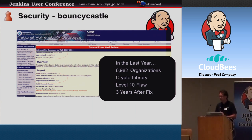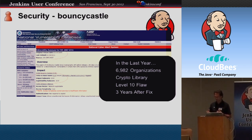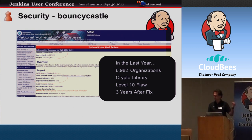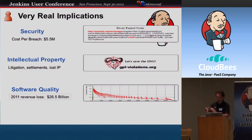For example, there's a security vulnerability in Bouncy Castle — the League of the Bouncy Castle — which is a well-known and very widely used security crypto library in Java. There is a security flaw with that library — a level 10 security flaw, which is the highest severity possible. A fixed version has been out for three years, but in the last year about 7,000 organizations still downloaded that exact artifact from the central repository. So most likely a whole bunch of organizations still have this library in their shipping WARs or EARs — three years after a fix was available.